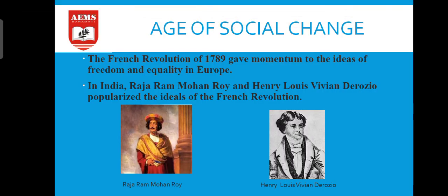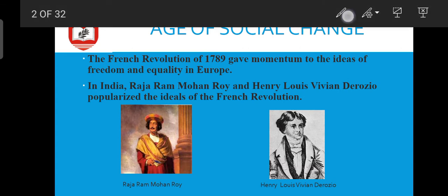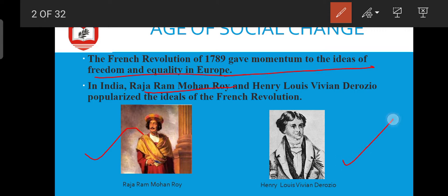The age of social change: the French Revolution of 1789 gave momentum to the ideas of freedom and equality in Europe. Previously people did not agree with the idea of equality and freedom, but later they experienced these ideas. In India, Raja Ram Mohan Roy and Henry Louis Vivian Derozio were popularized by the ideas of the French Revolution, and these people started following and implementing these ideas in their own respective countries.